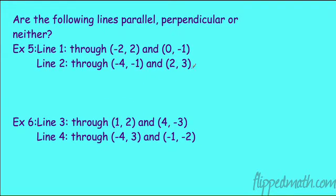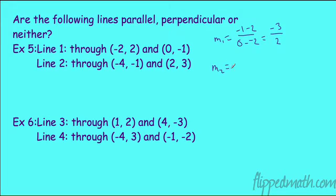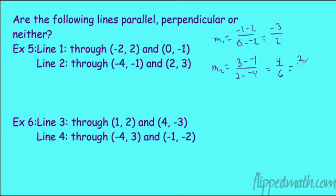Let's determine if lines are parallel, perpendicular, or neither. Slope one: negative 1 minus 2 over 0 minus negative 2 equals negative 3 over 2. Slope two: 3 minus negative 1 over 2 minus negative 4 equals 4 over 6, which reduces to 2/3. Negative 3/2 and 2/3 are negative reciprocals — therefore the lines are perpendicular.